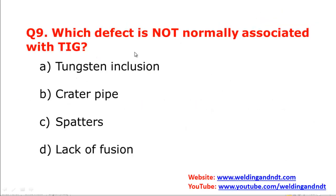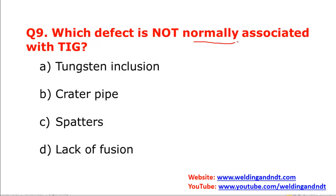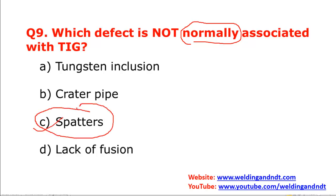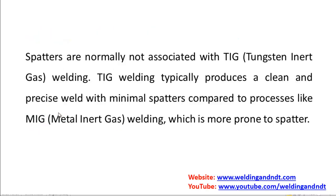Question number nine: which defect is not normally associated with TIG welding? In general, spatters are very minimal in TIG welding. I'm not saying spatters will not occur in TIG, but the chances are very minimal.